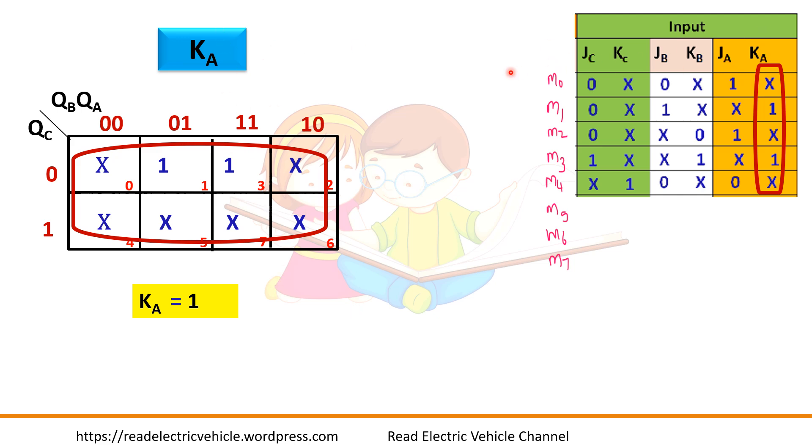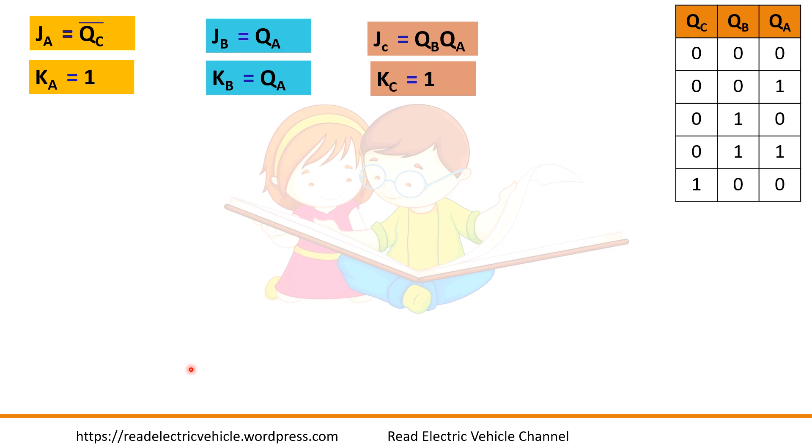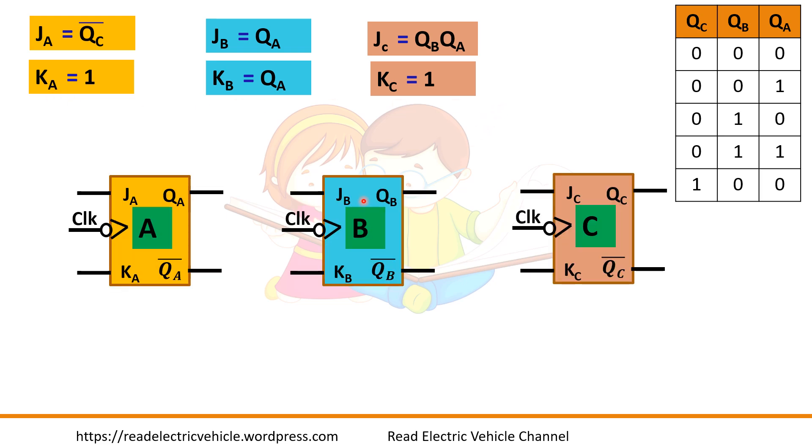So now we have found the relations for all the 6 variables. Always write the LSB first. So we need 3 flip-flops A, B, C. So let us take the 3 flip-flops A, B, C. So what is the input JA equal to? QC bar. So QC bar is here, so that we have to connect it to JA. What is KA? This one.